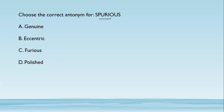Choose the correct antonym for 'spurious.' Spurious means fake or false — for example, a spurious claim is a false claim. The antonym for false is of course true, so the correct answer is 'genuine,' meaning not fake. 'Eccentric' means something very strange. 'Furious' means very angry. The correct antonym for spurious is 'genuine.'